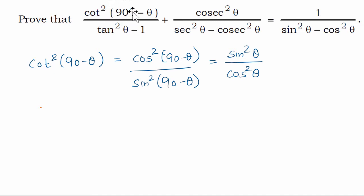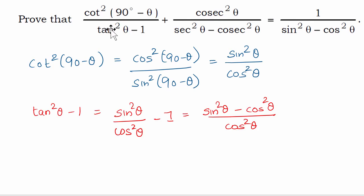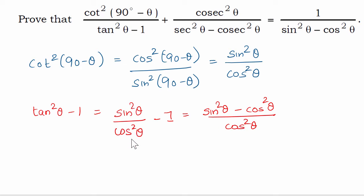We have solved the numerator of the first term. Now let us look at the denominator. The denominator is tan square theta minus 1. We know that tan theta is sin theta divided by cos theta. So tan square theta minus 1 becomes sin square theta divided by cos square theta minus 1, which simplifies to sin square theta minus cos square theta over cos square theta.